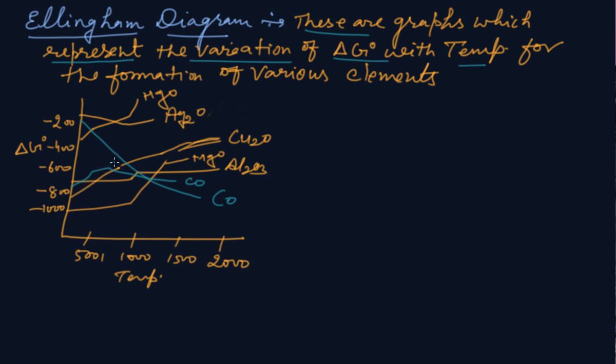Any metal which is higher on the diagram, the Gibbs free energy is more negative. The graph of which metal oxide is lower down, its Gibbs energy becomes more negative and the reaction will be more feasible. Any metal oxide with lower ΔG is more stable than the metal oxide with higher ΔG.